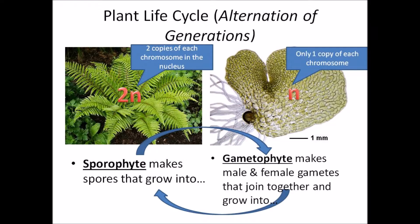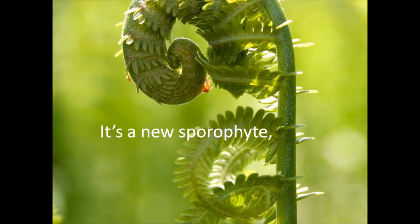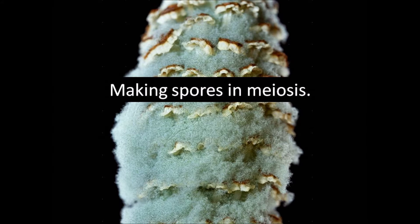Plants alternate generations. Gametes join in new combinations. It's a new sporophyte, making spores in meiosis.